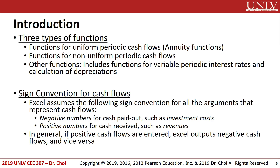Before we start, we have to understand the sign convention for cash flows. Excel assumes the following sign convention for all arguments that represent cash flows: negative numbers for cash flows such as investment costs, and positive numbers for cash received such as revenues. In general, if positive cash flows are entered, Excel outputs negative cash flows, and vice versa. So remember, the result will give you the opposite convention.